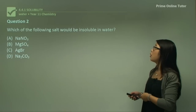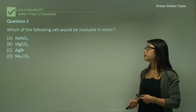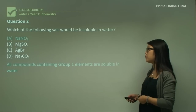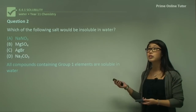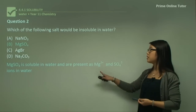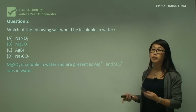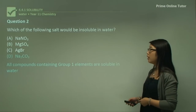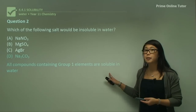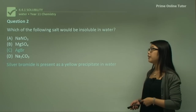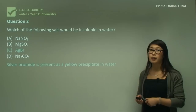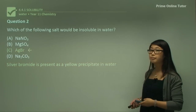Question two: which of the following salts would be insoluble in water? Option A contains sodium, and all group 1 elements are soluble in water, so it's not the answer. Magnesium sulfate dissolves in water to form magnesium ions and sulfate ions, so it's soluble. Another option also contains sodium (Na), and all group 1 elements are soluble. We're left with silver bromide, which forms a yellow precipitate in water — so C is the correct answer.